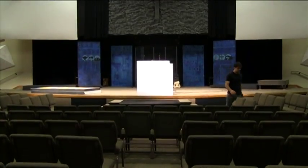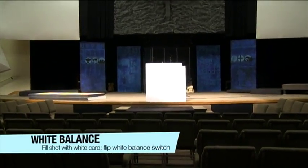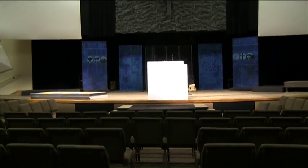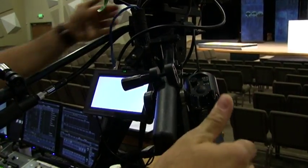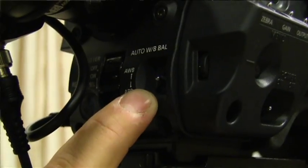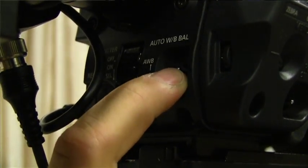You may need to white balance the camera. Place the large white card found backstage center stage with the lights on. Zoom into the card, making sure the card completely fills your shot. Now just flip the white balance switch at the front of the camera, and you're all set.